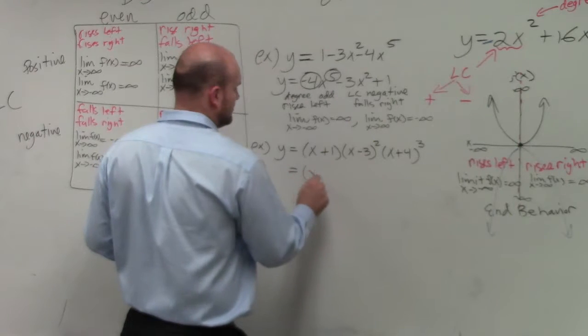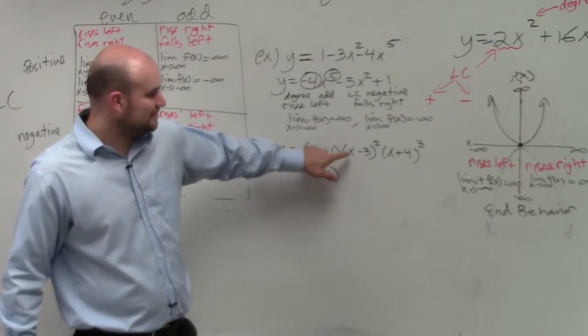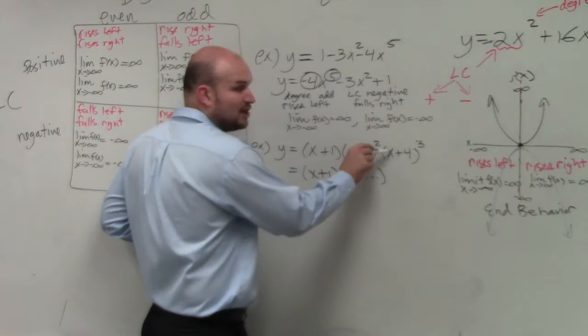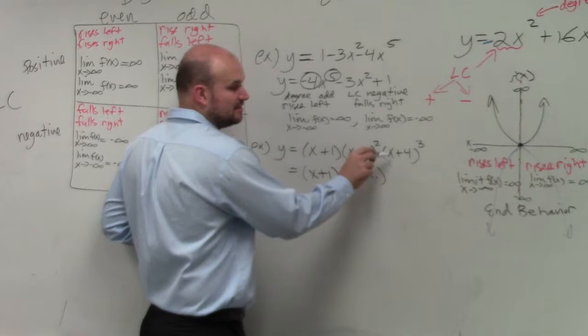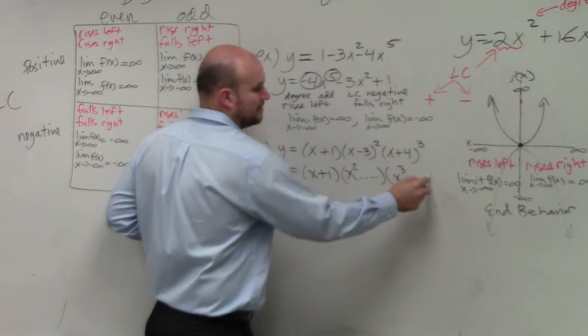So if I was to multiply this out, if something's cubed, so here, this largest is going to be x squared dot dot dot. The largest this is going to be is going to be x to what power? Cubed.